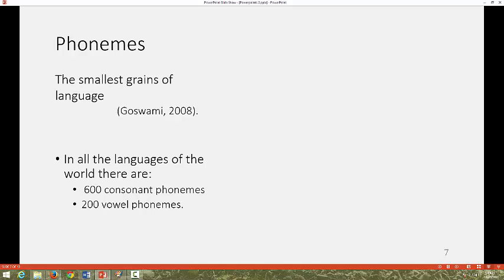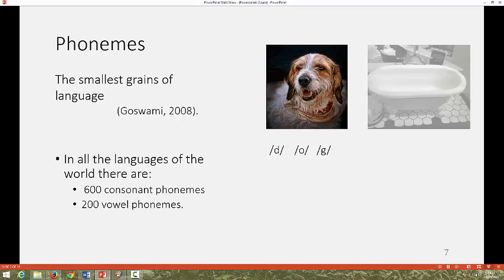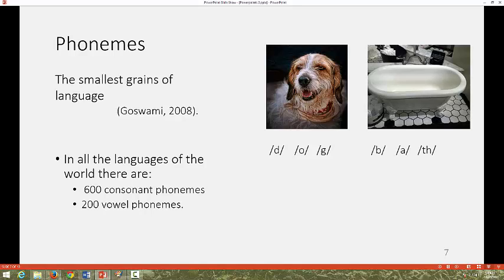Let's take a simple example. The word dog has three phonemes: d, o, g. The word bath also has three: b, a, th. At birth, the human brain is capable of distinguishing all of these different sounds, as well as those from all the languages of the world.